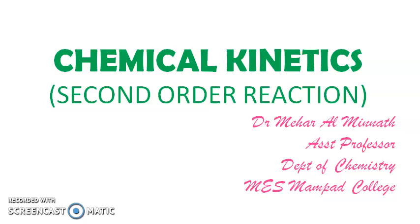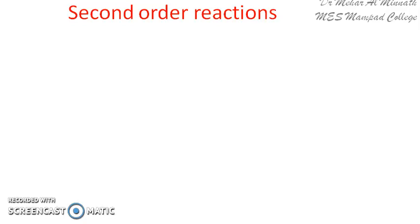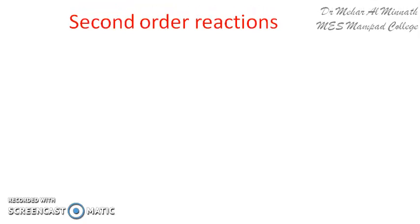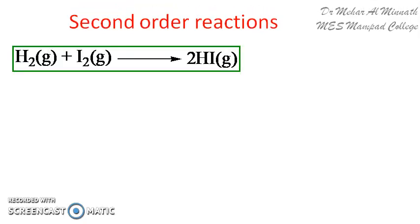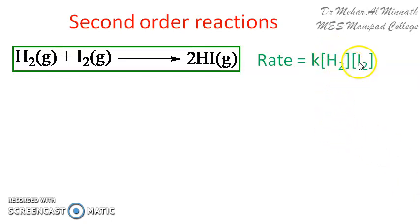Let us look at a few examples of second order reactions. The formation of hydrogen iodide from hydrogen and iodine is one example. Its rate expression is written as K into [H₂] into [I₂], and the sum of the powers of these two concentration terms is equal to 2.